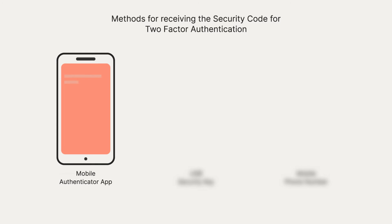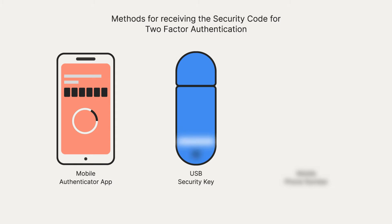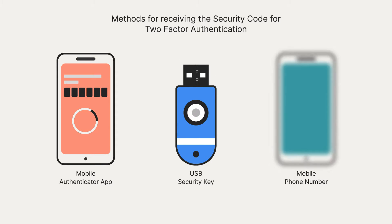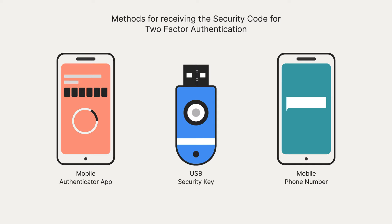You can download and use any mobile authenticator app on your smartphone. You can purchase a USB security key, or use an existing one. You can use a mobile phone number to receive the security code via text message or phone call.